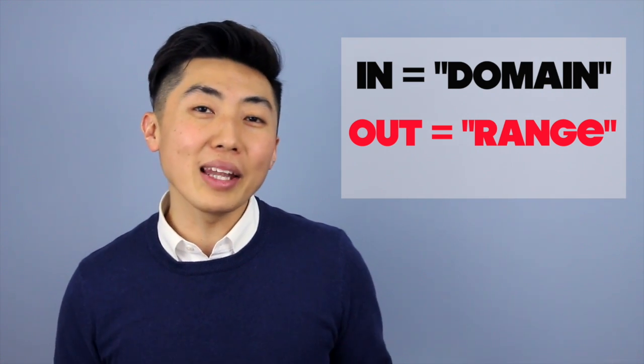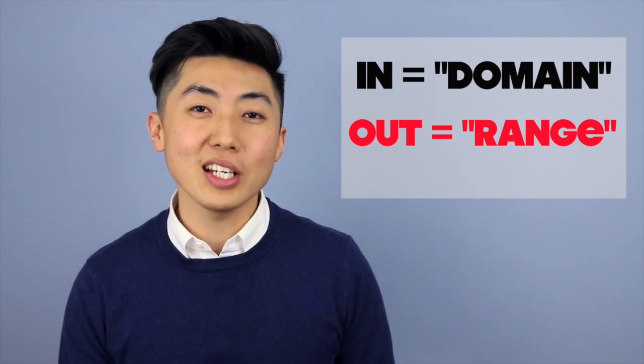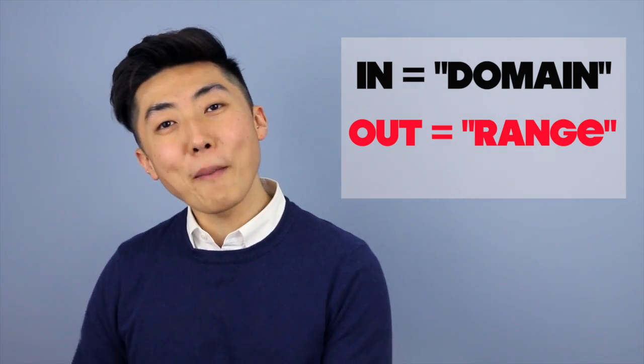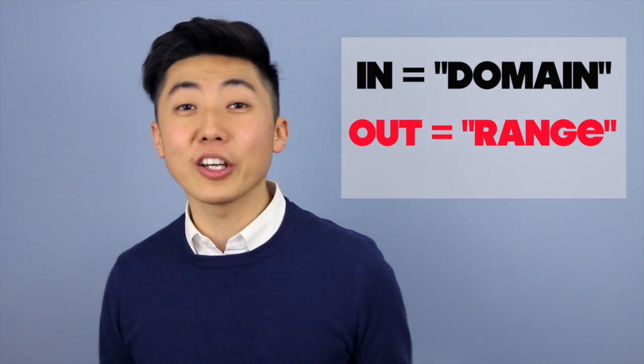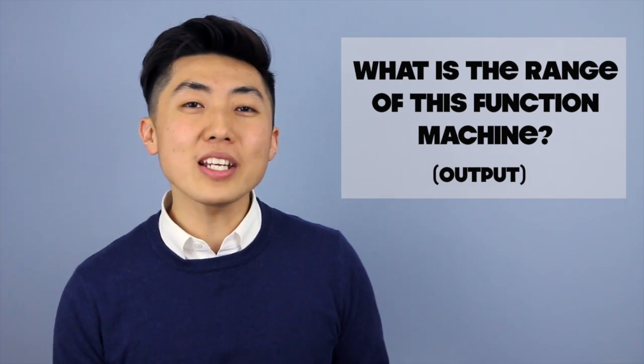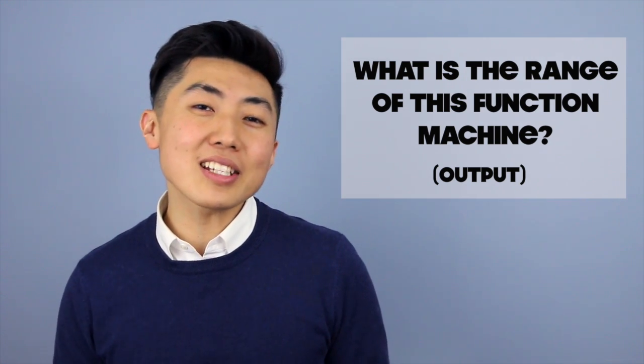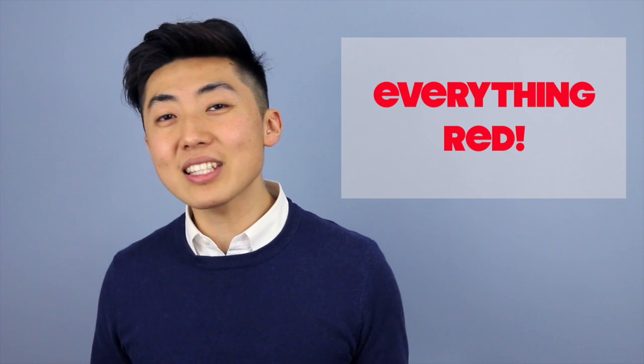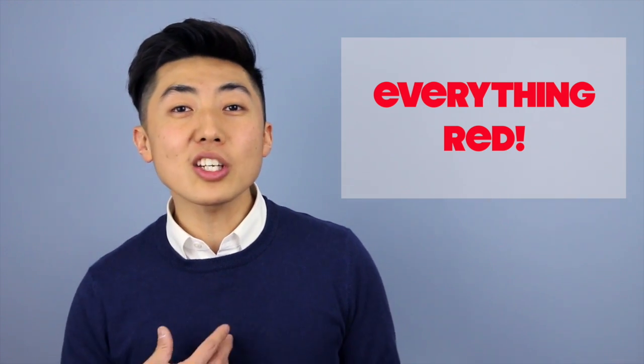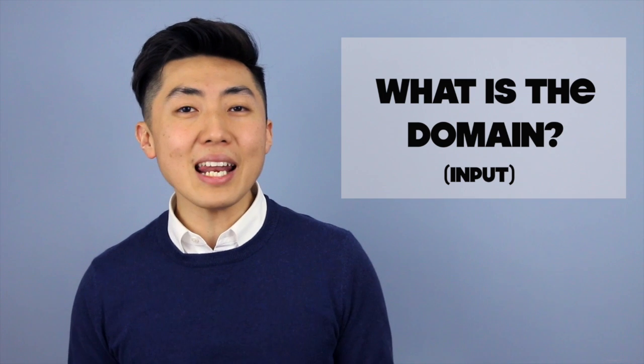We have a couple bits of terminology that we have to go over. Anything that I'm allowed to put into the function machine is called a domain. And anything that's going to come out of our function machine is called our range. So in this case, what is the range of this function machine that's turning everything red? Have you guys decided? Well, the range in this case should be anything and everything that's the color red. Because we should expect to get anything red, but only red items. We're not going to get anything blue. So our blue items are not part of our range.